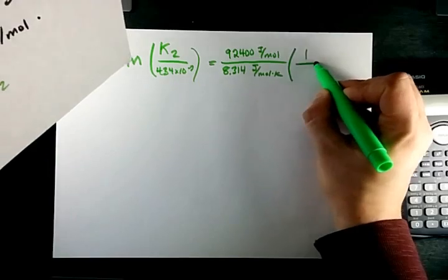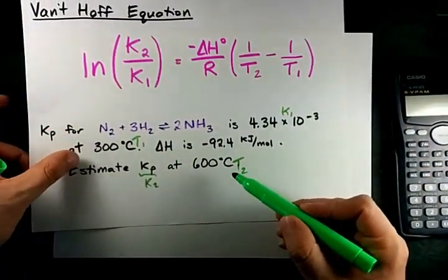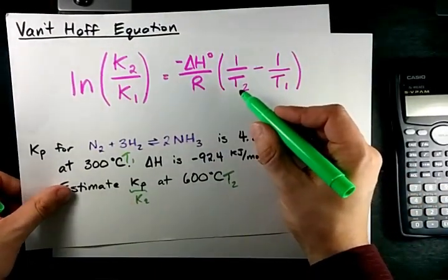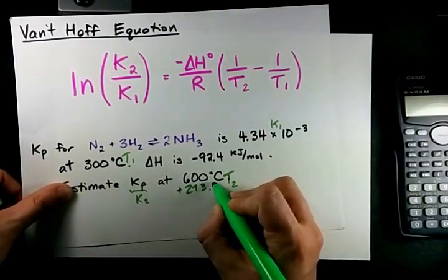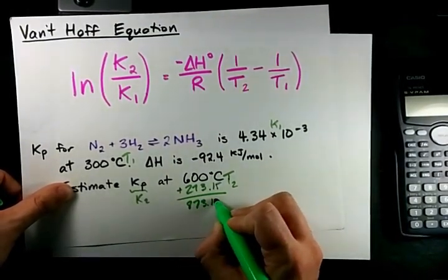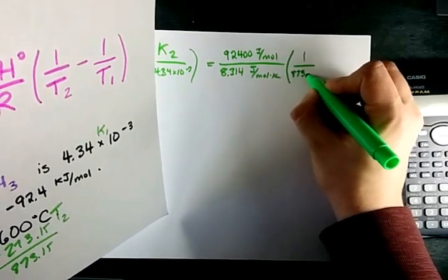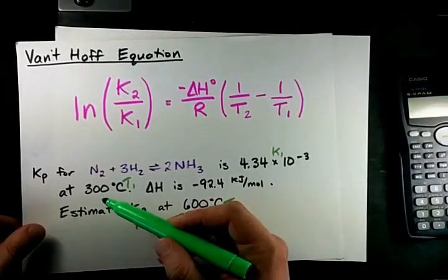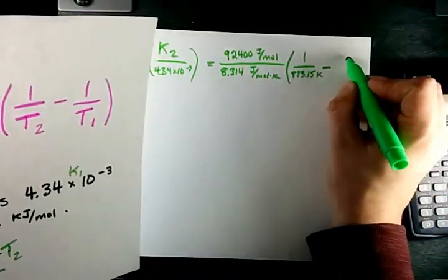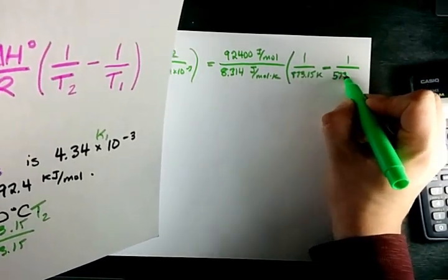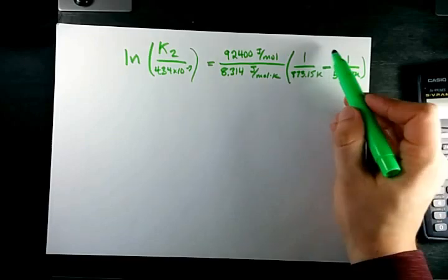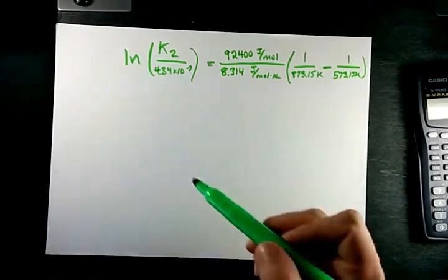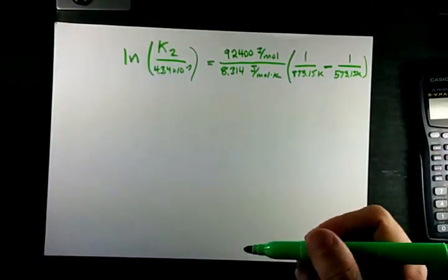Anyways, let's do this part, 1 over T2. T2 for me is that 600 degrees Celsius, but in this equation it needs to be in Kelvin, so I need to add 273. That makes 873.15 Kelvin. Minus, and the T1 is 300 degrees less than that. That's 573.15 Kelvin. Note that this unit is Kelvin to the negative 1, which cancels out with this Kelvin to give us a unitless unit. All right, now it's calculator time.